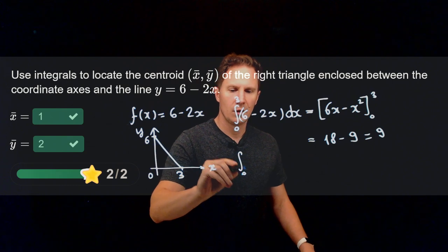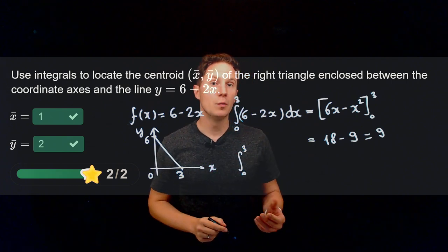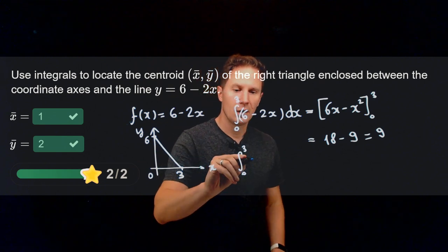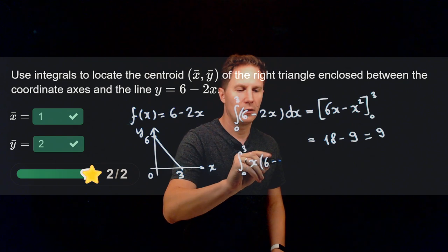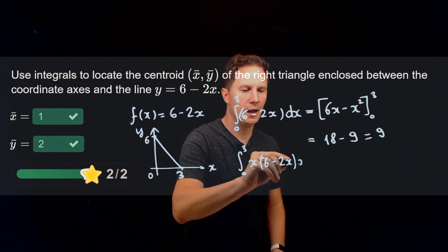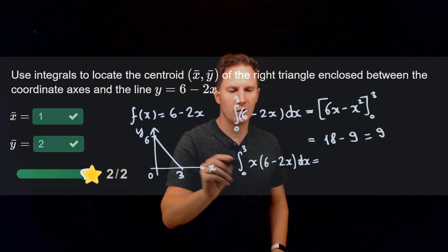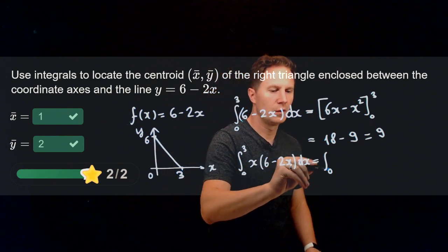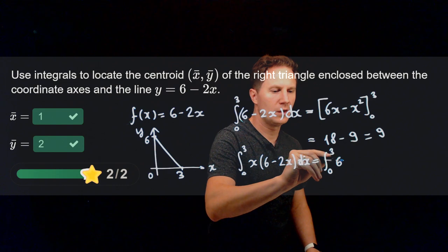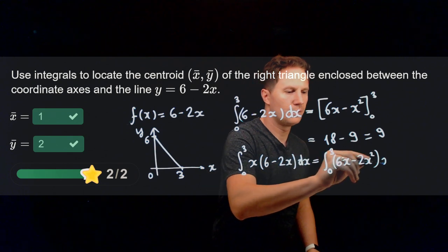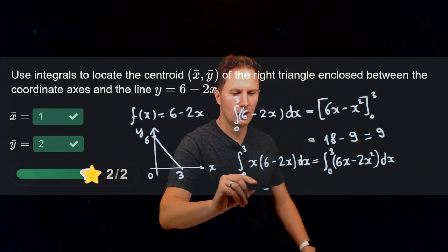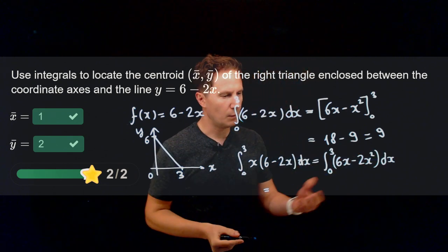As for the integral that appears in the numerator of the x-coordinate, we need to take x times the function, so x times (6 minus 2x) dx as x goes from 0 to 3. So that's the integral from 0 to 3 of 6x minus 2x squared dx.